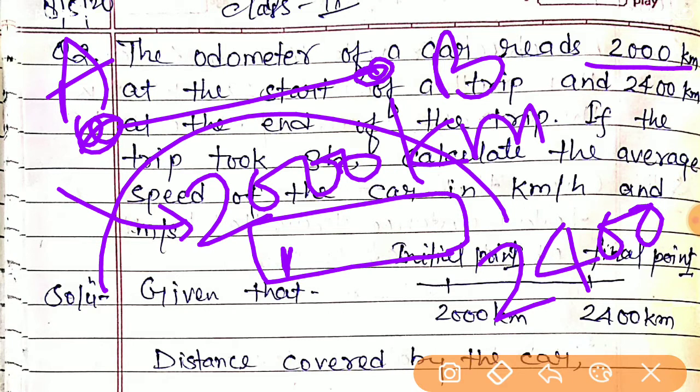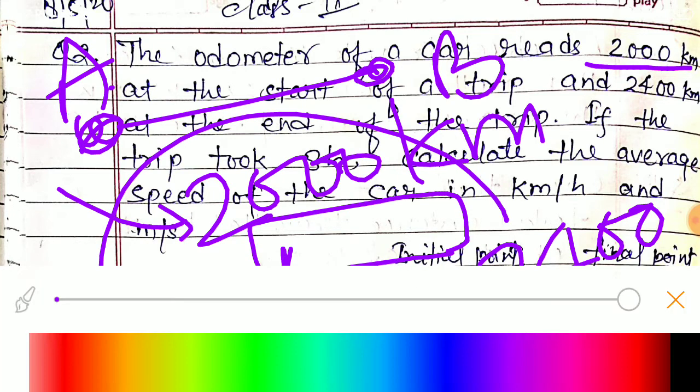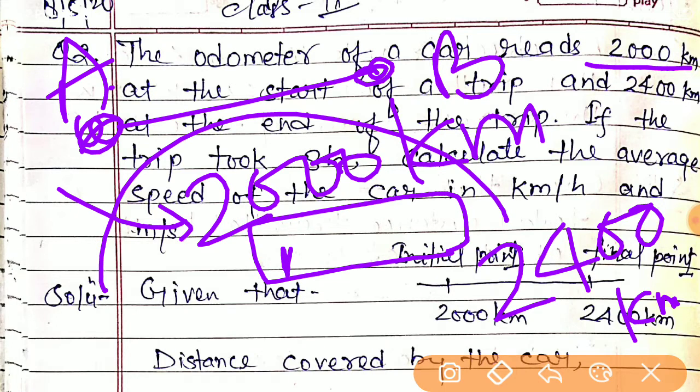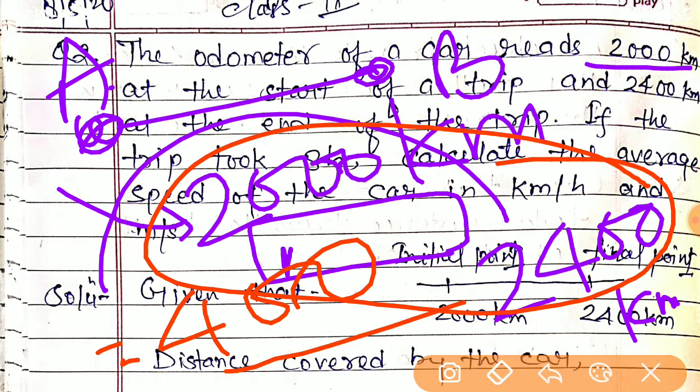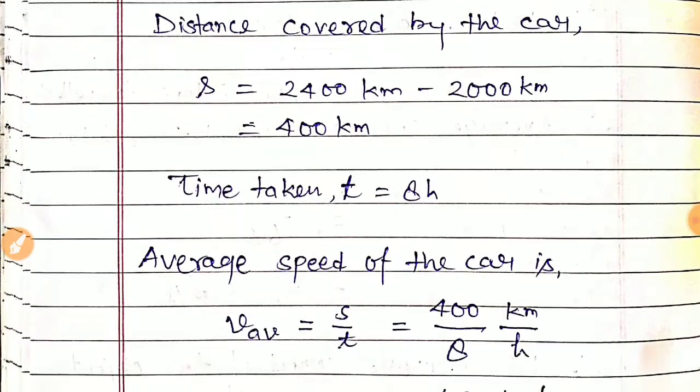In this case, you can find the distance covered by the car. The distance equals 2400 kilometers minus 2000 kilometers, which gives us 400 kilometers. The displacement is 400 kilometers.